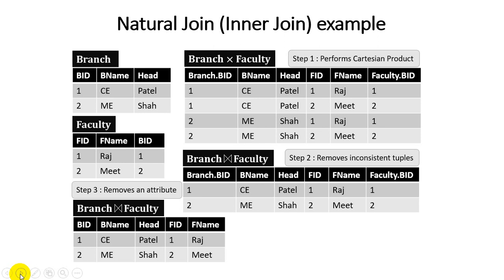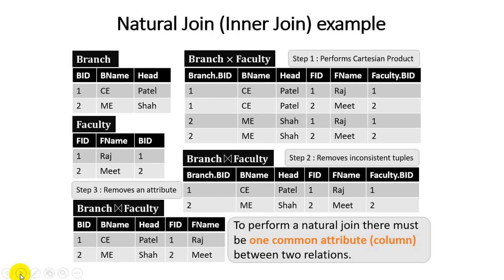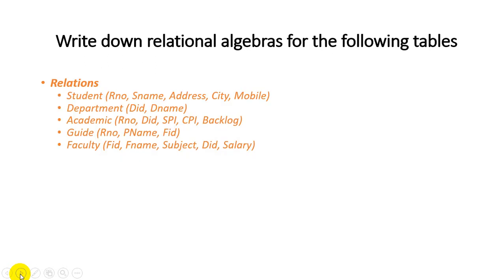From both examples we conclude that to perform a natural join, there must be at least one common attribute (column) between the two relations. Whenever an end user needs to retrieve records from multiple relations, it is compulsory for one attribute to be common across all relations. Now here is an exercise: relations include student (r_number, s_name, address, city, mobile), department (department_id, department_name), academic (role_number, d_id, spi, cpi, backlog), guide (r_number, p_name, fid), and faculty (fid, f_name, subject, d_id, salary).